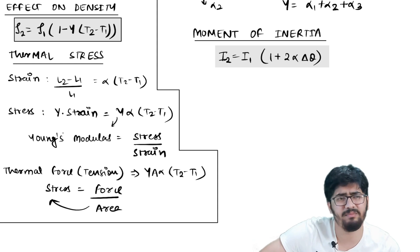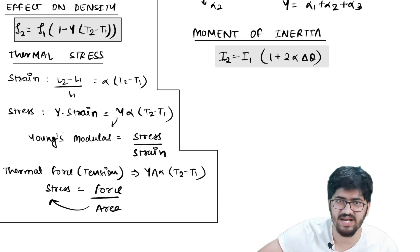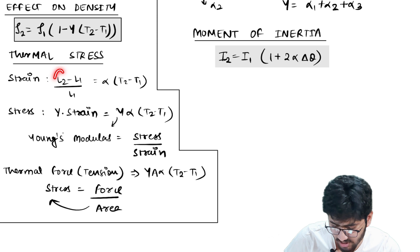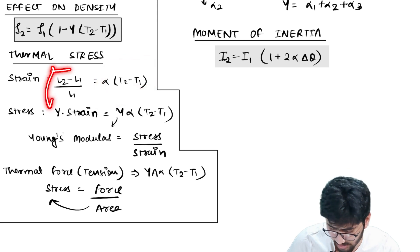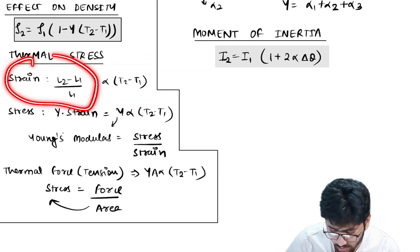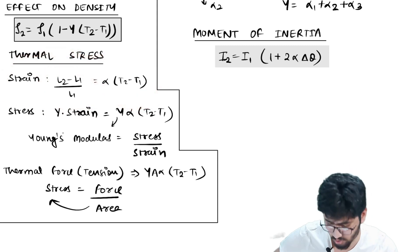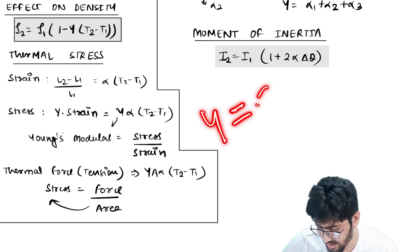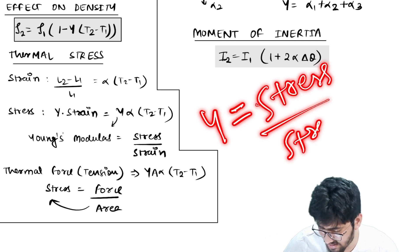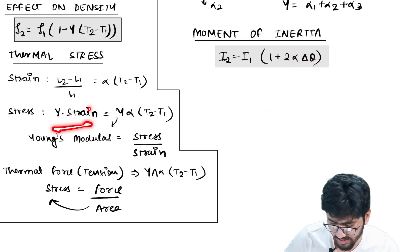Now, thermal strain. Strain is defined as change in dimension upon original dimension, which equals (L2 - L1)/L1 = α·ΔT = α·(T2 - T1). So thermal strain equals α·ΔT. Then, since stress = Young's modulus (γ) × strain, the thermal stress = γ × α·(T2 - T1).